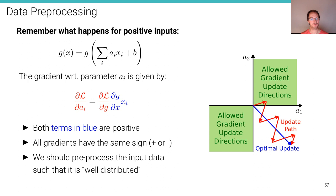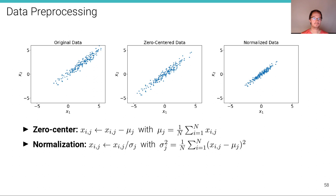The same should hold not only within each individual layer but also for the input itself. That's why the dataset is typically preprocessed before being fed into a neural network. The most common preprocessing is zero-centering, where we subtract the mean from each element. We compute the mean for each dimension — in this two-dimensional dataset, the mean over x1 and x2 — and subtract it, so the dataset has mean at (0, 0).